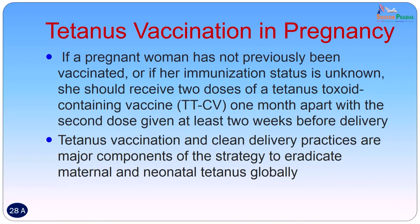Tetanus vaccination in pregnancy is important. If a pregnant woman has not previously been vaccinated, or if her immunization status is unknown, she should receive 2 doses of a tetanus toxoid-containing vaccine (TTCV) 1 month apart, with the second dose given at least 2 weeks before delivery. Tetanus vaccination and clean delivery practices are major components of the strategy to eradicate maternal and neonatal tetanus globally, and India has successfully managed to eradicate neonatal tetanus through both these techniques.